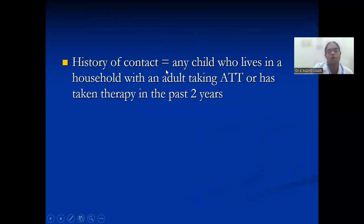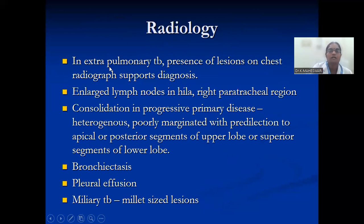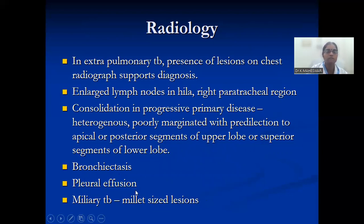Definition of history of contact: any child who lives in a household with an adult taking ATT or who has taken therapy in the past two years. Radiology in extra-pulmonary TB: presence of a lesion on chest X-ray supports the diagnosis. Enlarged lymph nodes in the hilum and right paratracheal region, consolidation in progressive primary disease — heterogeneous, poorly marginated, with predilection for apical or posterior segments of the upper lobe or superior segments of the lower lobe. Bronchiectasis, pleural effusion, and miliary tuberculosis showing millet-sized lesions are the radiological findings.